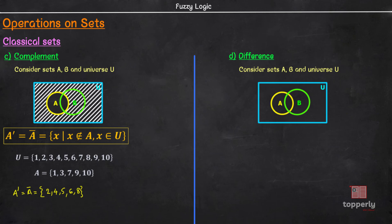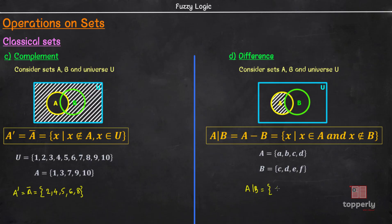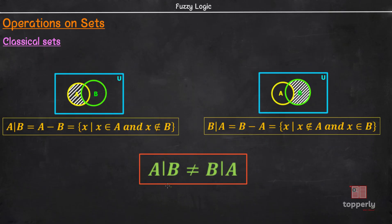Finally, we have the difference operation. A minus B is defined as a set of elements X such that X belongs to set A and X does not belong to set B — that is, all the elements in set A but not in set B. Considering our earlier defined sets A and B, A minus B is equal to {A, B}. Elements C and D are not members because C and D belong to set B also, so in the difference operation common elements are removed. Therefore, A difference B is also equal to A intersection B complement. An important point to remember is that A minus B is not the same as B minus A.